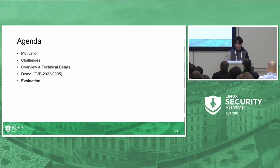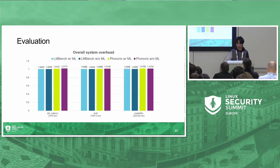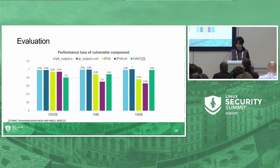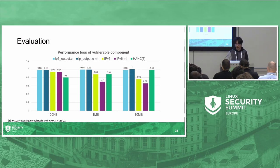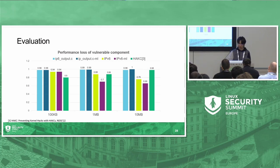Here is the evaluation of the machine learning model's accuracy and the performance of our tool in a practical environment. We use LMBench as the micro benchmark and Phoronix test suite to test common applications as a macro benchmark. The overhead is negligible whether or not machine learning auditing is enabled. Compared to the state-of-the-art sandbox solution HAKC, we also quarantined the IPv6 module and tested the impact on Apache Bench IPv6 file transfer performance. The legends represent: quarantined single file, quarantined with machine learning, and quarantined module with machine learning.